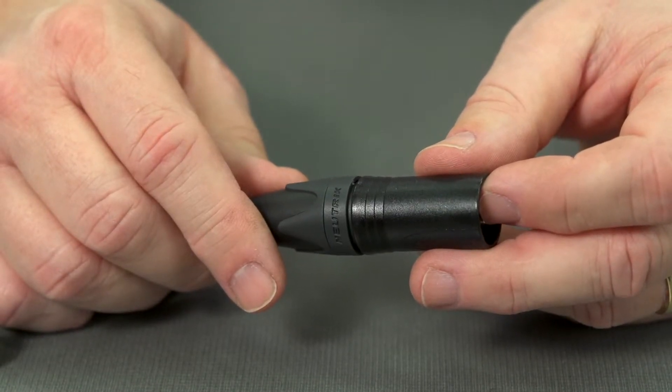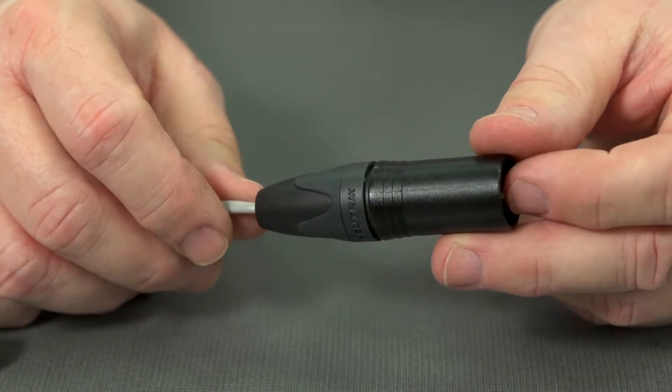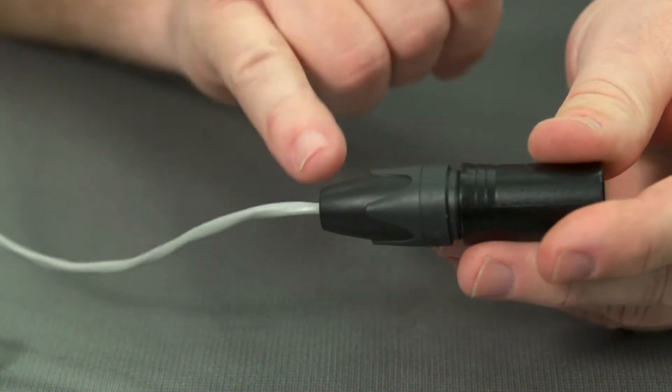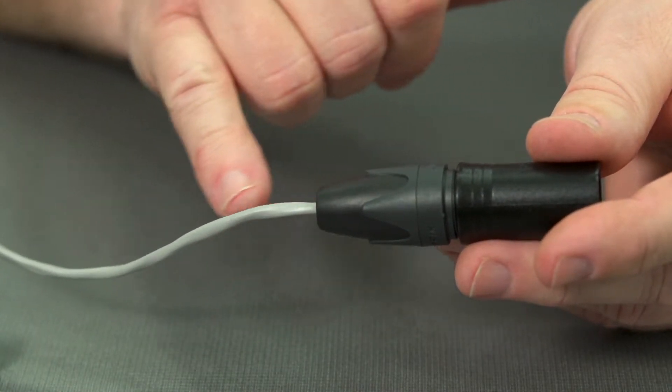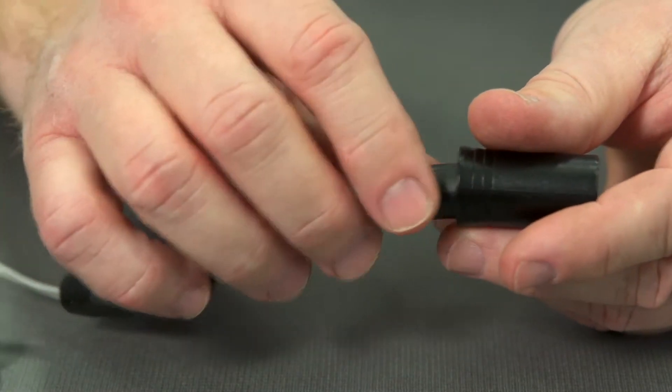Okay, let's take a look at just some random terminations that we've seen. And these are not staged connections, by the way. These are actual connections made by some folks. The first thing that I would notice here is there's no heat shrink coming out of the back of the connector. So let's go ahead and open this up and see what we can find.